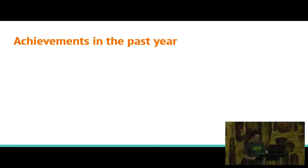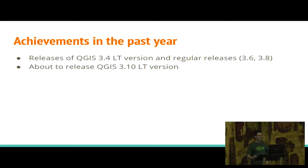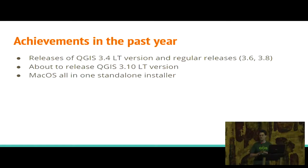Let's discuss what we've achieved in the past year. We released QGIS — 3.4 was released as the LTR version, along with in-between releases, and we're going to release 3.10 in about a couple of weeks. A major achievement recently was a new macOS installer: an all-in-one installer without the requirement to install any frameworks or libraries beforehand. I think the Mac users are quite happy about it.